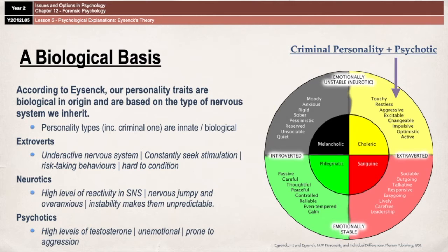The criminal personality is highly extroverted, highly neurotic, and highly psychotic. You can see on the screen that this results in traits like touchy, restless, aggressive, excitable, changeable, impulsive, and active behaviour. Obviously, as it gets down towards the emotionally stable area, the characteristics start to sound a little bit more positive rather than negative.